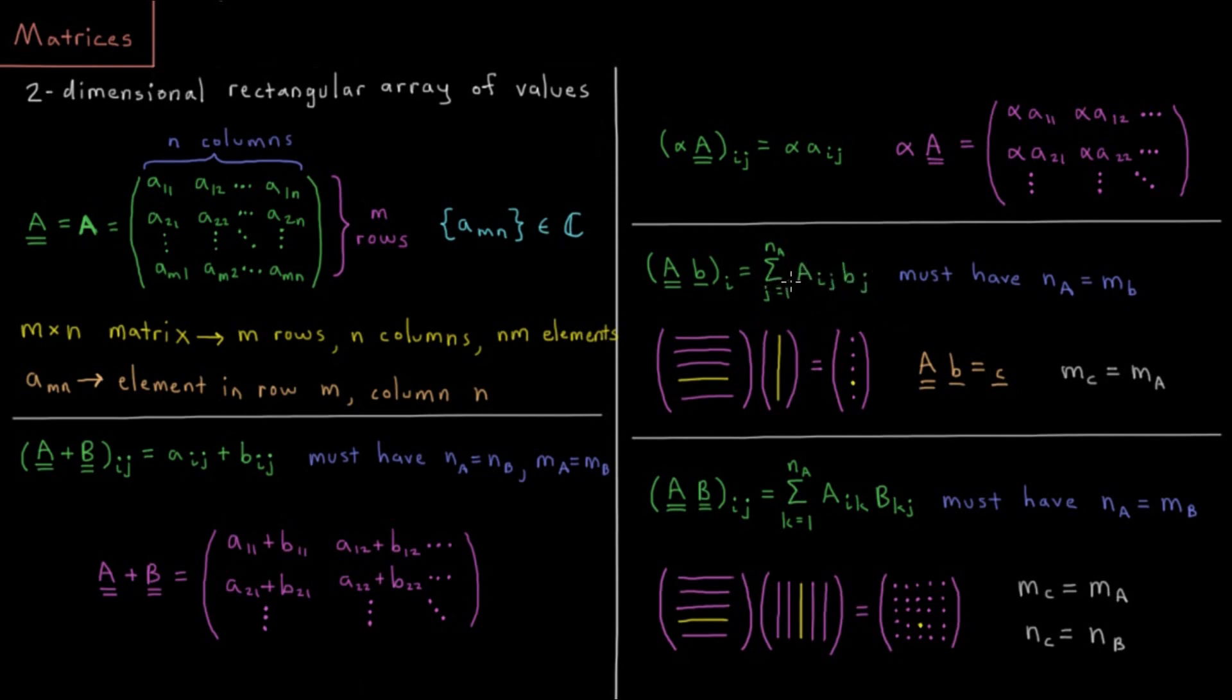In order for this to work out, we have to have some conditions that we can meet. We have to have that the number of columns of matrix A is equal to the number of rows or the number of elements of vector B. If that's true, we can multiply this matrix and vector together.